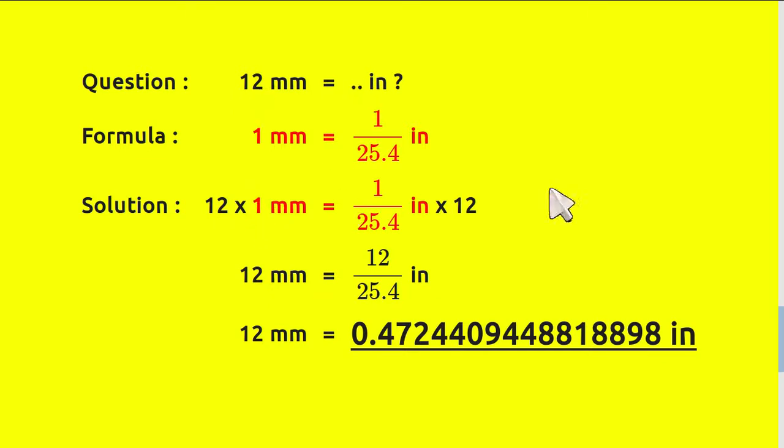So, to make an equation, we need to put 12 here and 12 here as well, which is why now we have 12 here and 12 here. Okay, now 12 times 1 equals 12 and 12 times 1 over 25.4 is this number, 12 divided by 25.4.